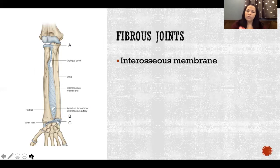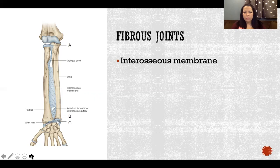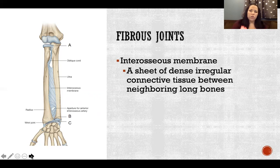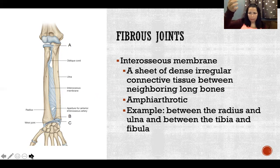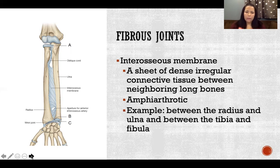Our third category of fibrous joints is an interosseous membrane. We have these in two places: one is between the radius and ulna in the forearm, and the other is between the tibia and fibula in the lower leg. It's a sheet of dense irregular connective tissue between neighboring long bones, really just in those two locations, and it's amphiarthrotic, allowing a slight bit of movement. Pronation and supination of the forearm is actually diarthrotic movement occurring at the superior and inferior radioulnar joints, at the elbow and at the wrist.